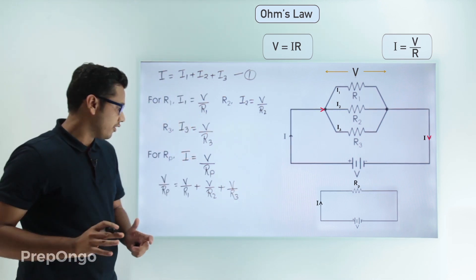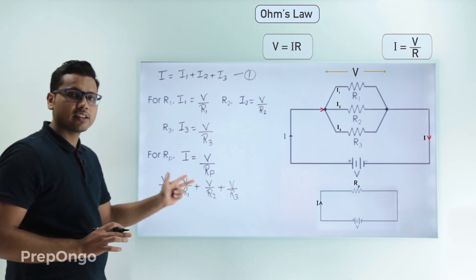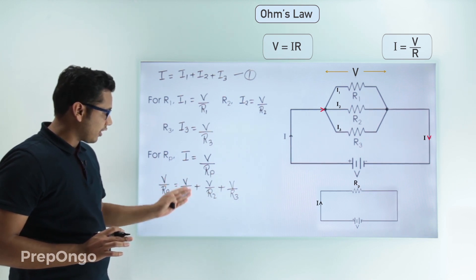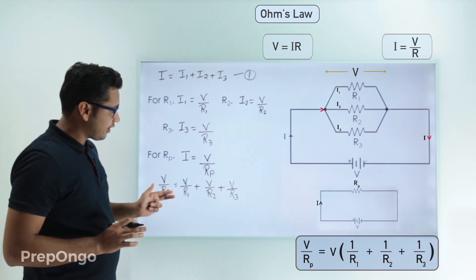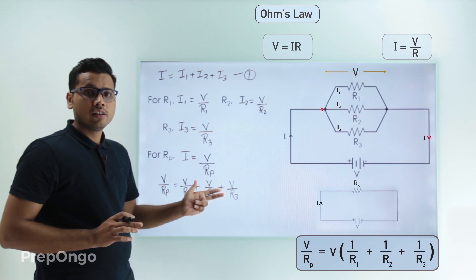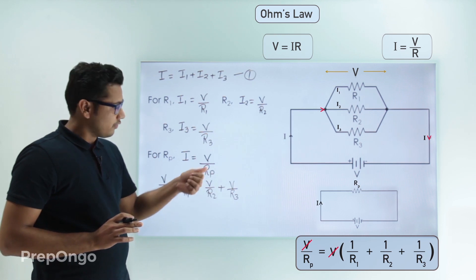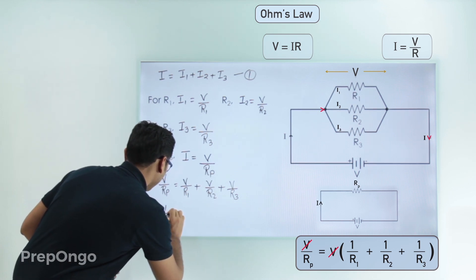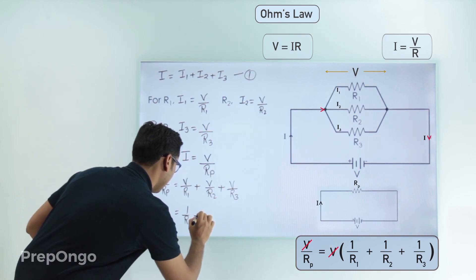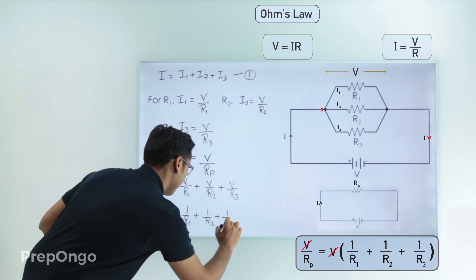Substituting: V/Rp = V/R1 + V/R2 + V/R3. If we take V as common on the right side, V cancels from both sides, leaving: 1/Rp = 1/R1 + 1/R2 + 1/R3. So we have derived the formula for equivalent resistance when resistors are in parallel.